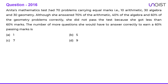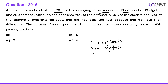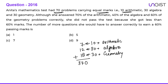Next question: Anita's mathematics test had 70 problems carrying equal marks — 10 arithmetic, 30 algebra, and 30 geometry. She answered 70 percent of arithmetic — that is 7 questions. 40 percent of algebra — 40 percent of 30 is 12. And 60 percent of geometry — 60 percent of 30 is 18. So she answered a total of 7 plus 12 plus 18, which is 37 questions out of 70.